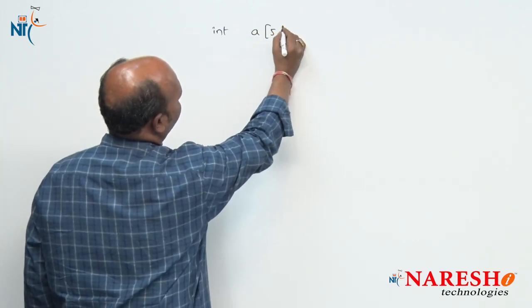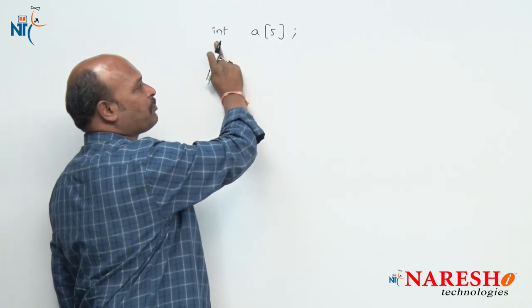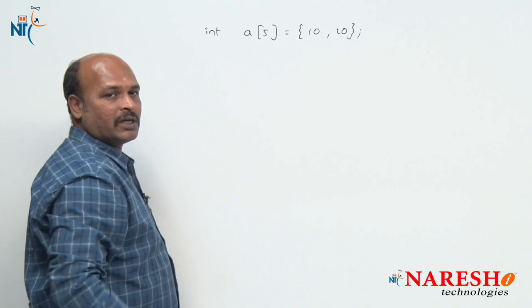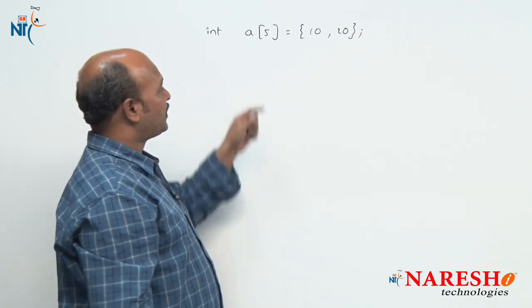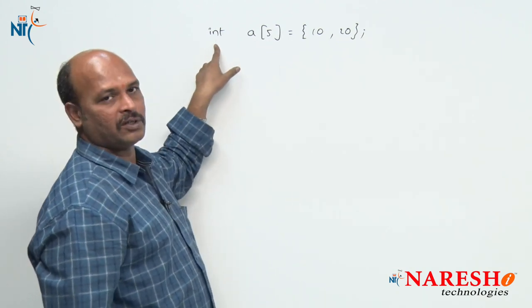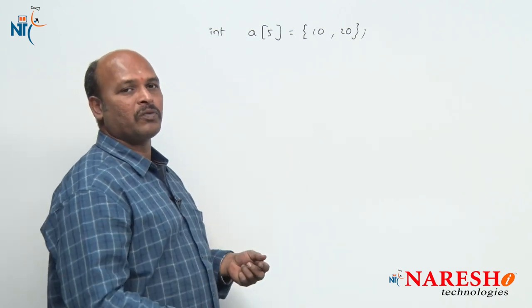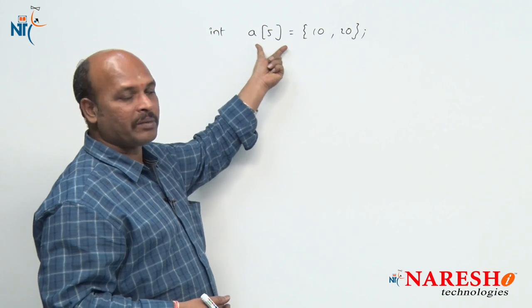For example, I am declaring one array: int a[5]. When this program is compiled, 5 cells of type integer are created. In a 16-bit compiler, 5 integers means 10 bytes are allocated because of the size 5 and type integer. During execution, our OS allocates 10 bytes for this array.